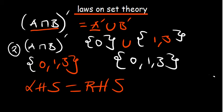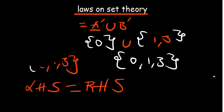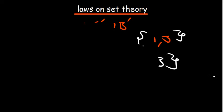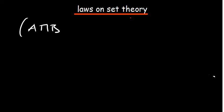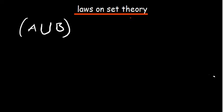You can also confirm the other De Morgan's law. Where you have (A union B) complement, try proving it equals A complement intersection B complement. So we've talked about De Morgan's laws.